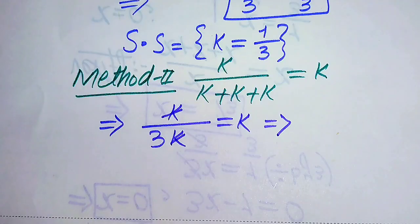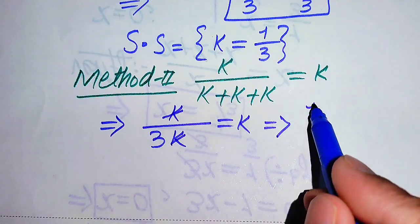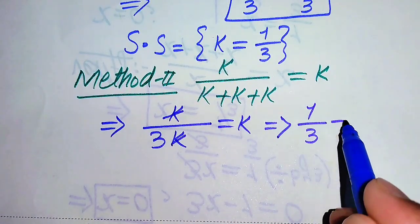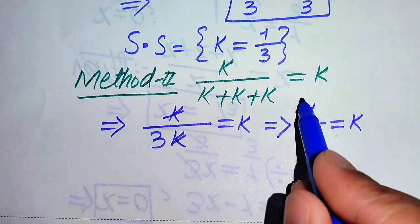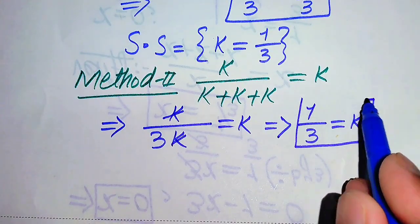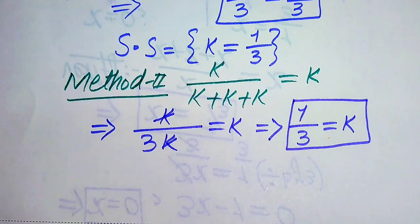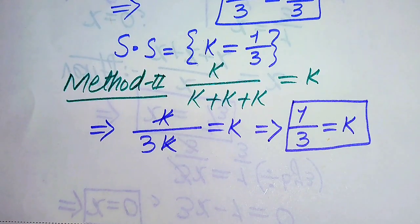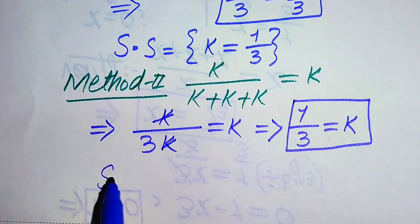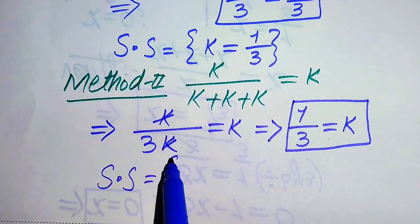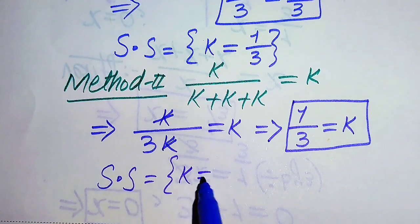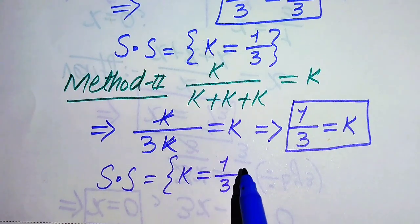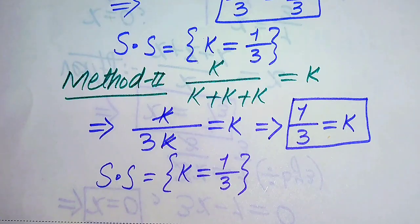The k in the numerator and the k in 3k cancel, giving 1/3 equals k. So in the second method we directly get k equals 1/3. Since we already verified this value satisfies the equation, the final solution set is k equals 1/3.